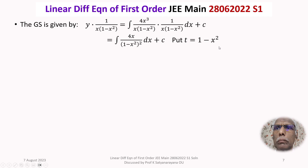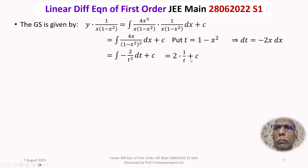Substitute t = 1 - x². Differentiating: dt = -2x dx, so 4x dx = -2dt. The integral becomes ∫(-2/t²)dt + C. Integrating, ∫-1/t² gives 1/t, so the result is 2/t + C = 2/(1 - x²) + C. Thus the general solution is y / [x(1 - x²)] = 2/(1 - x²) + C, and multiplying through, y = 2x + C·x(1 - x²).